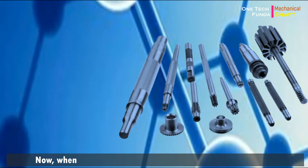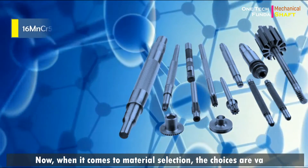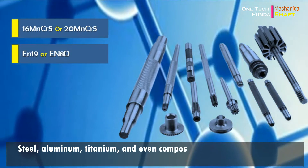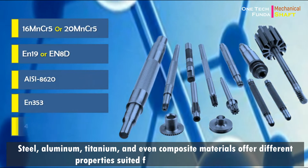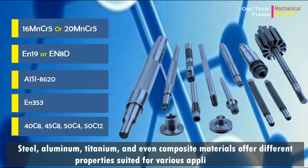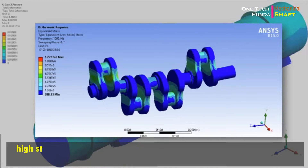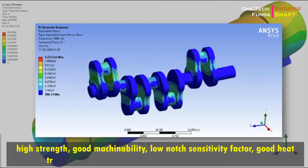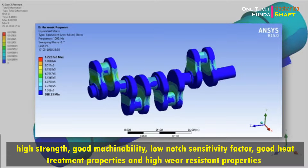When it comes to material selection, the choices are vast. Steel, aluminum, titanium, and even composite materials offer different properties suited for various applications. The material used for shafts should have high strength, good machinability, low notch sensitivity factor, good heat treatment properties, and high wear-resistant properties.